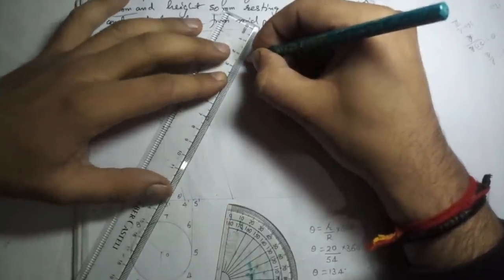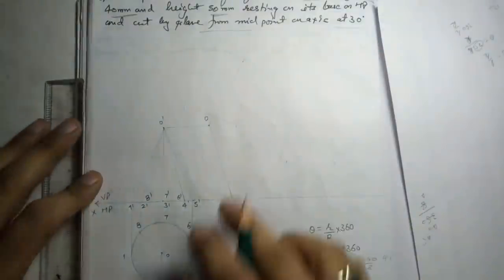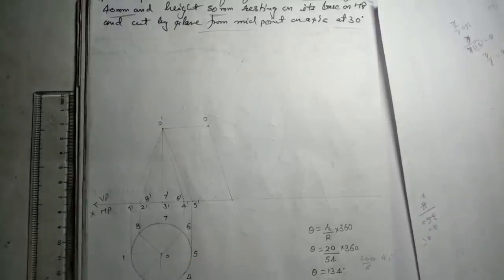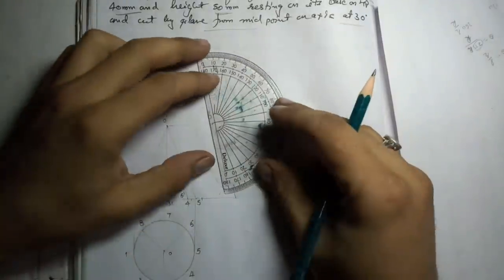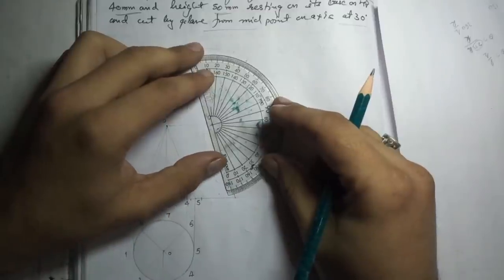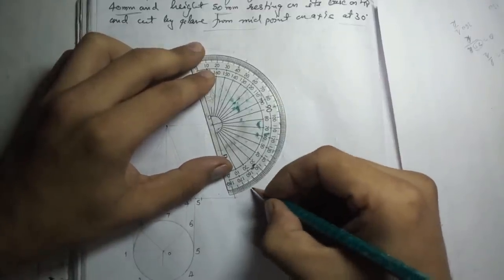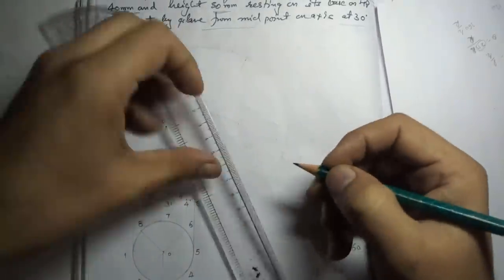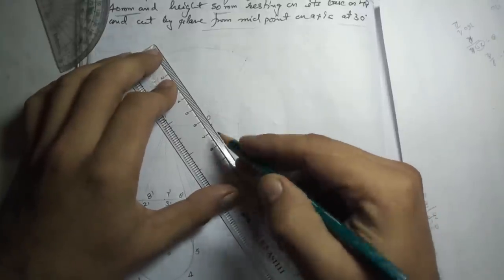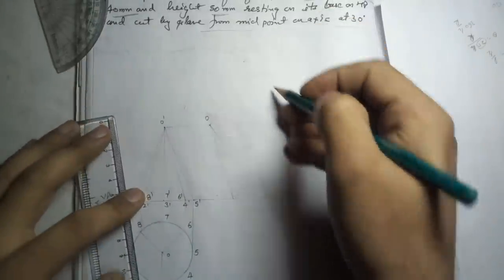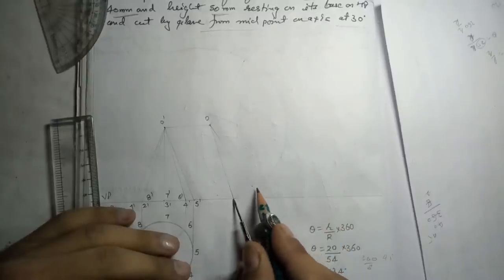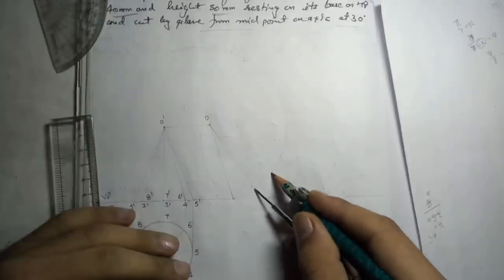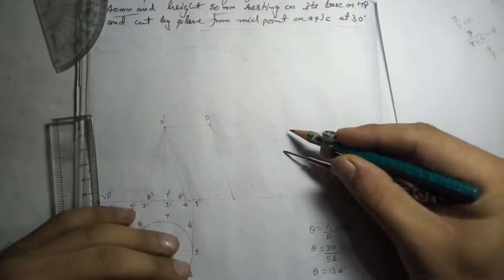That is approximately correct. Join it again — this is the total perimeter of the cone. Now divide this into eight parts. If I divide 134 by 8, I get 16.6 degrees. First take the angle 16.6 here approximately, then join it. You could take 16.6 eight times, or open the compass to divide into eight parts directly to save time.